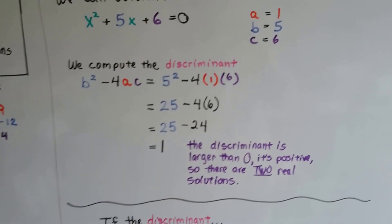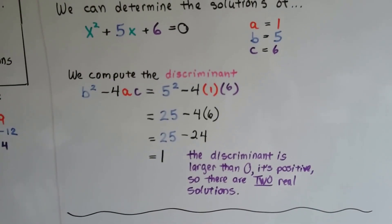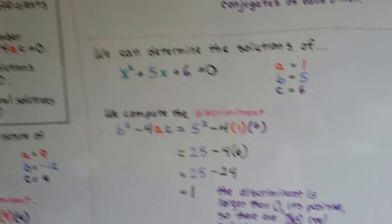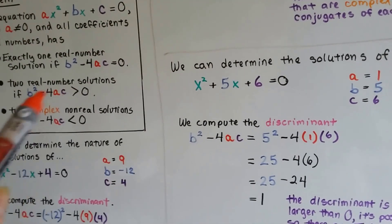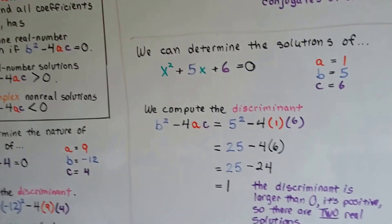The discriminant is larger than zero. It's positive. So there's two real solutions. If it's larger than zero, we have two real number solutions.